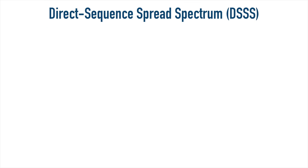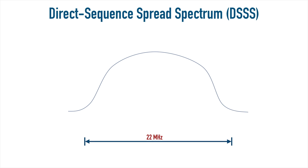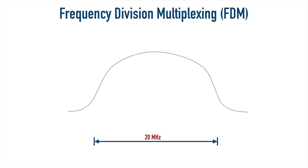If we go back to .11b, it used something called Direct Sequence Spread Spectrum, where a channel was 22 MHz in size and a single stream of communication would occupy the entire 22 MHz channel. While that might sound great, the way error detection and recovery had to work wasn't really efficient. It's actually mathematically preferable to break this one big channel up into multiple channels.